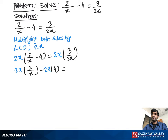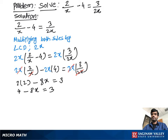As you see, x and x cancel out, we get 2 times 2 minus 2x times 4, which is 8x, is equal to 3 (since the 2x cancels out). So 2 times 2 is 4, minus 8x equals 3. Now we subtract 4 from both sides.